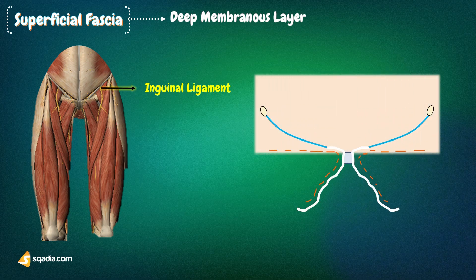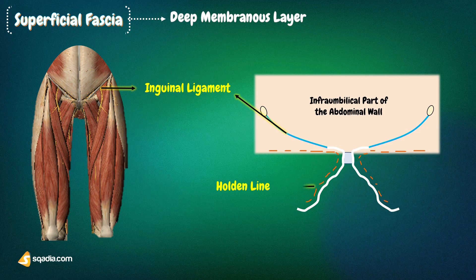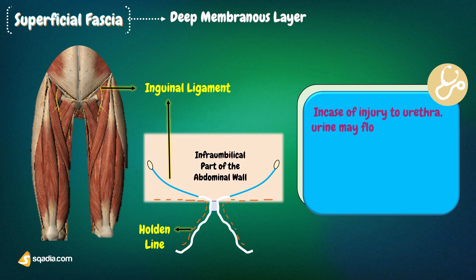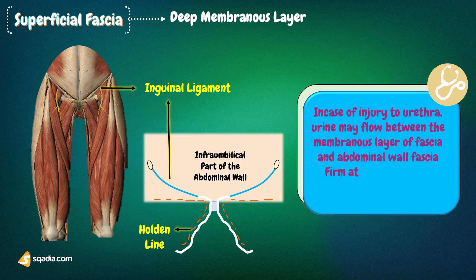The line of firm attachment is called Holden's line. It begins a little lateral to the pubic tubercle and extends laterally for about 8 cm. This deep membranous layer is clinically very important because, when the urethra is injured in the perineum, urine may flow out or extravasate into the interval deep to the membranous layer of superficial fascia.